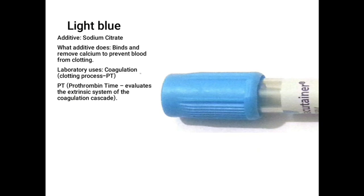A light blue container has an additive sodium citrate. Sodium citrate binds and removes calcium to prevent blood from clotting. It is used for coagulation studies such as thrombin time. Any tube that removes calcium is not used for electrolytes, because calcium is part of the electrolytes — as a result it cannot demonstrate calcium.